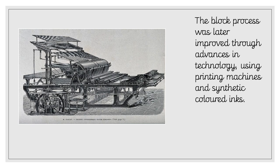After the block process, printing in general in Britain moved towards printing machines rather than blocks being done by hand. In history we've been talking about the industrial revolution, and this coincides with it in the sense that without the industrial revolution, advances in this technology would not have happened. So these two things coincide — they happened at a similar time.